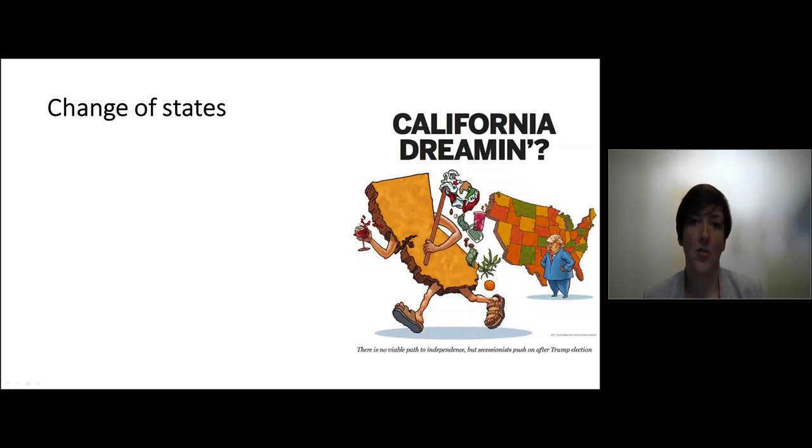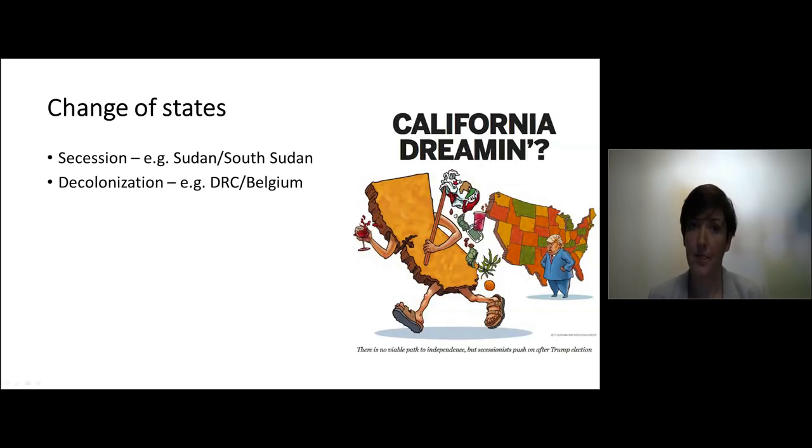States can also change their nature. And changes can be, for example, through secession. In secession, a certain part of the territory of a state becomes a new state. And that happened, for example, with South Sudan and Sudan, but also, for example, with Kosovo. It is also through decolonization that many states came into being. And this process is more or less ended by now. But for a long time, it created many, many new states. So the former colonizing powers had many territories overseas who became independent states. And for example, the Democratic Republic of Congo was part of Belgium.